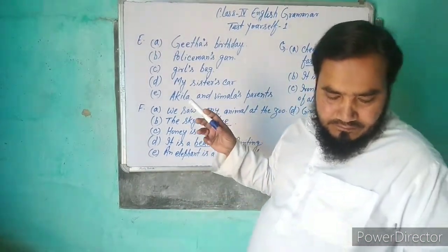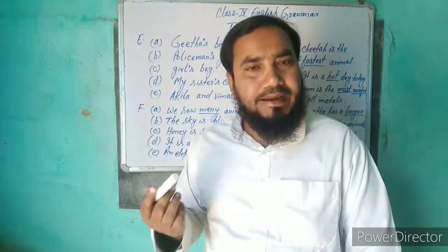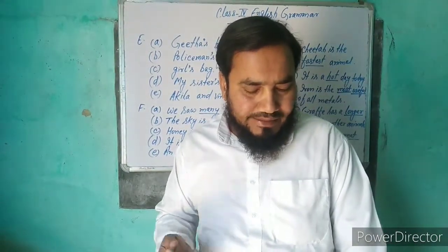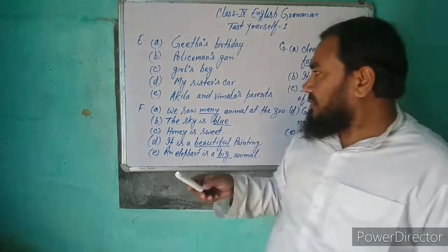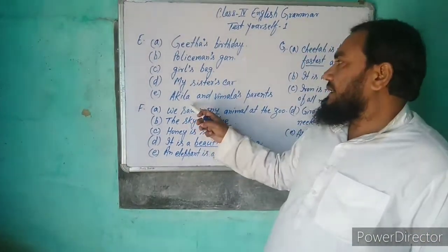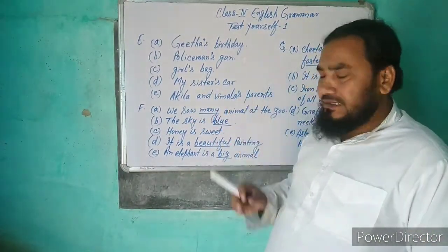اس کے بعد E ہے: The parents of Aquila and Vimala۔ تو possessive noun لگانے کے بعد کیا ہوگا؟ Aquila and Vimala's parents۔